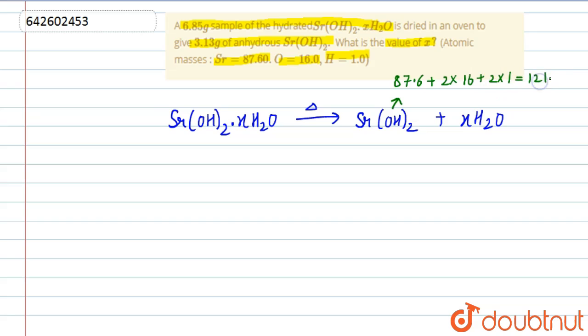It will be equal to 121.6 grams, and total weight of Sr(OH)₂·xH₂O will be 121.6 plus 18x, because we don't know the value of x and the molar mass of water is 18.